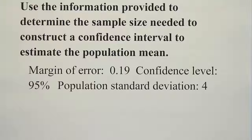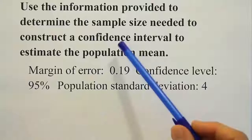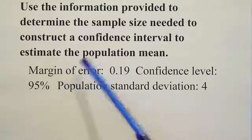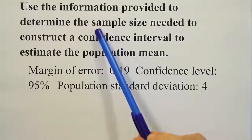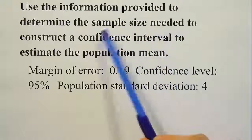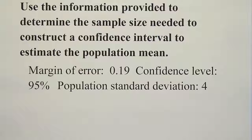In this video we're going to learn how to improve the features of your graphing calculator by writing our own simple program to solve a problem the calculator isn't set up to do originally. The problem says: use the information provided to determine the sample size needed to construct a confidence interval to estimate the population mean. Our graphing calculator does not have a built-in feature to do that.